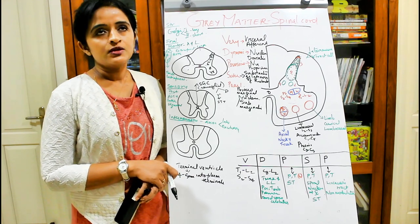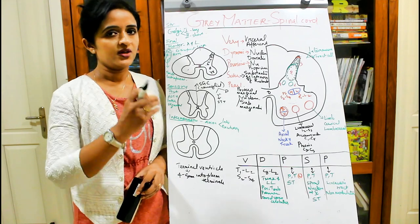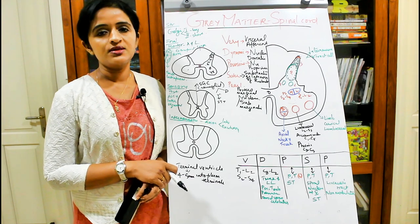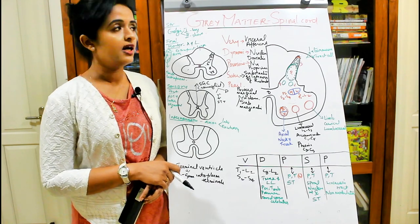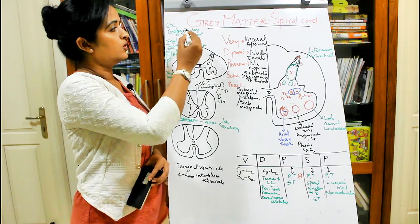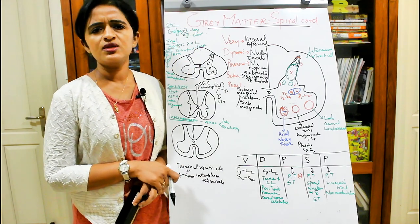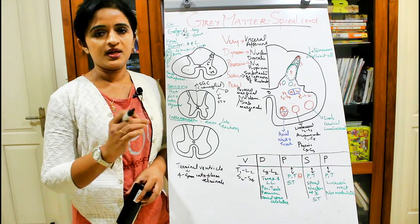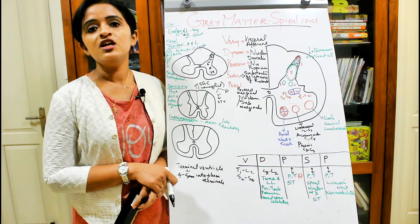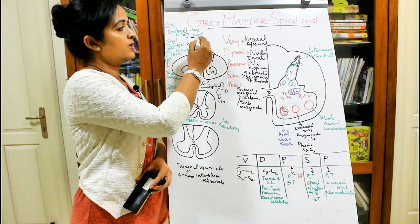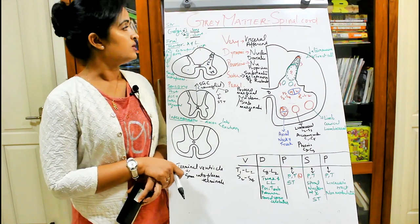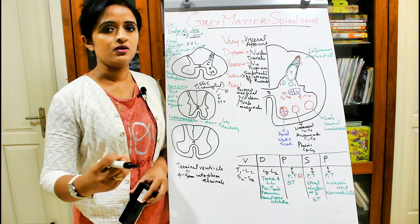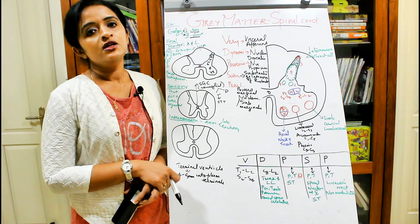Structurally speaking — that is, depending upon the length of the axons — there are mainly two types of neurons in the gray matter of the spinal cord: Golgi type 1 and Golgi type 2. Type 1 neurons have long axons, whereas type 2 neurons have short axons. That is the structural classification of neurons.